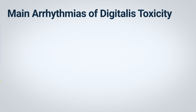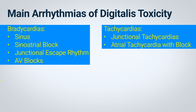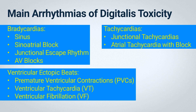Recall that when a patient suffers from digitalis toxicity, they may experience a range of arrhythmias, from tachyarrhythmias to bradyarrhythmias. Examples of bradyarrhythmias include sinus bradycardia, sinoatrial block, or the patient might endure such an extreme bradycardia that it evolves into a junctional escape rhythm, or atrioventricular blocks ranging from first-degree AV block to complete heart block. In terms of tachyarrhythmias, the patient could develop junctional tachycardia, atrial tachycardia with variable block, or an increase in ventricular ectopic beats, ranging from isolated beats to ventricular tachycardia or even ventricular fibrillation, potentially leading to death.